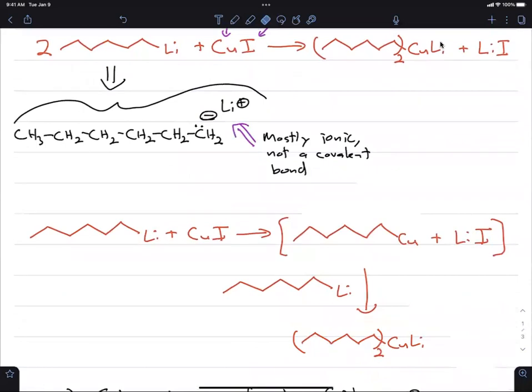So when we add our first organolithium species to the copper iodide, overall we're going to create an intermediate, it's not the final product, but we'll create an intermediate that is neutral. In other words, it has no charge, along with lithium iodide.